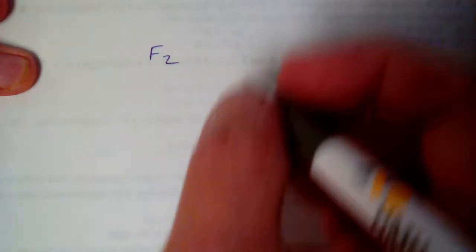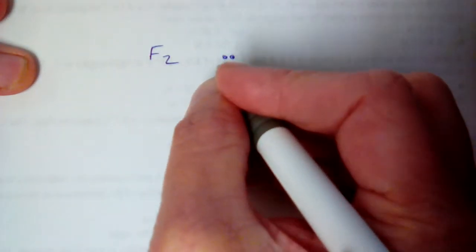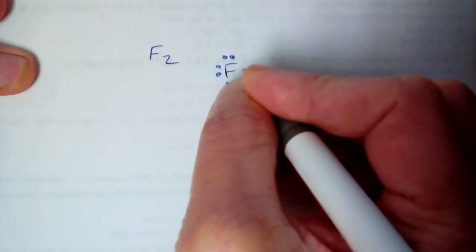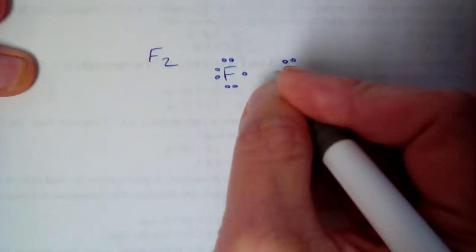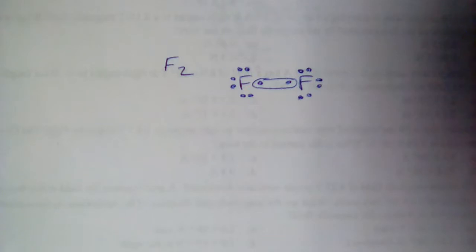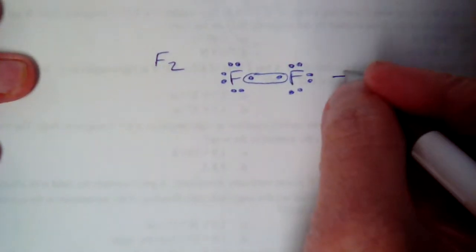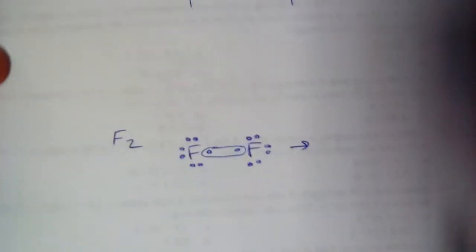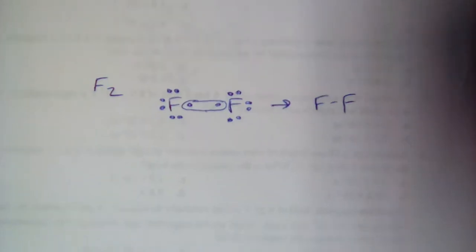For F2, I've got two atoms of fluorine, so it's going to be a linear molecule. Fluorine is in group 17 with seven valence electrons — three pairs and a single. When I pair up the single dots, I make one loop, using up all the single dots. One loop indicates a single bond. When I connect the two fluorines together in the structural formula, I use a single dash representing that single bond — one pair of electrons being shared.